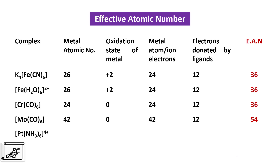The last example is [Pt(NH3)6]4+: platinum's atomic number is 78, oxidation state is plus 4, so the total electrons with the metal becomes 74. The 6 ammonia ligands donate 12 electrons — 74 plus 12 gives an effective atomic number of 86. The values 36, 54, and 86 are the atomic numbers of the nearest noble gases krypton, xenon, and radon respectively.